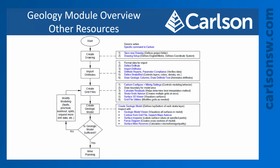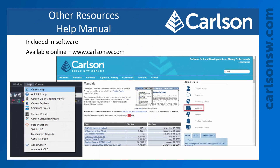This video series has covered many different steps for using the geology module, but this was just an overview — there are many other commands we were not able to discuss. First, we have the help manual, included directly in the software and also available online. In the software, go to the Help pulldown menu, select Carlson Help, and you'll find every command has documentation, often including pictures and explained workflows to help you understand the expected inputs and outputs. On our website, we have a PDF version and an HTML version of the help manual.